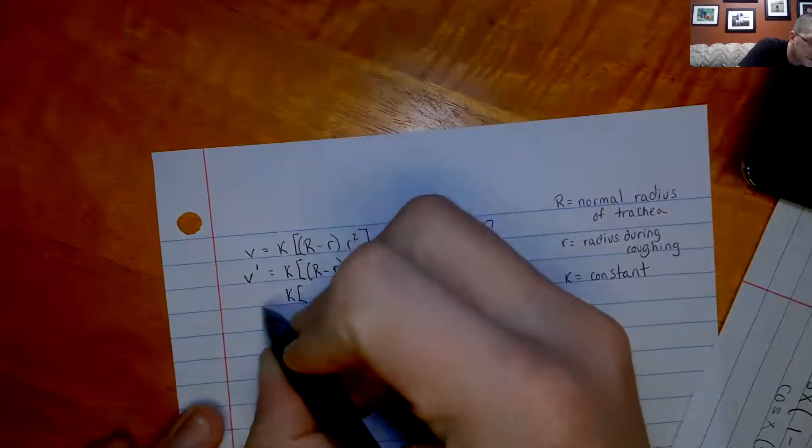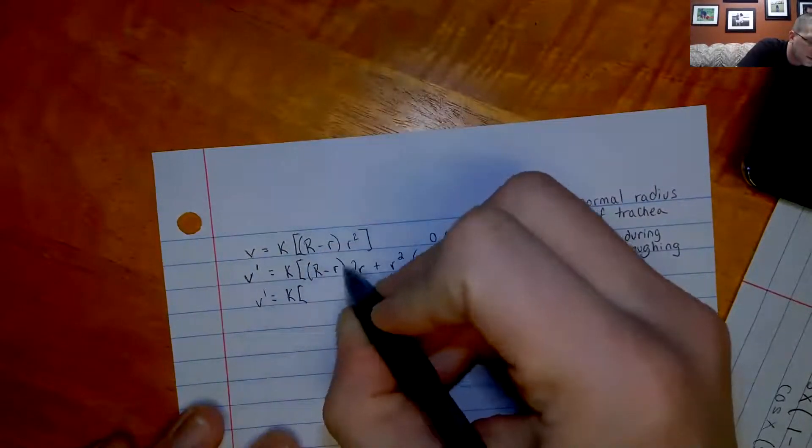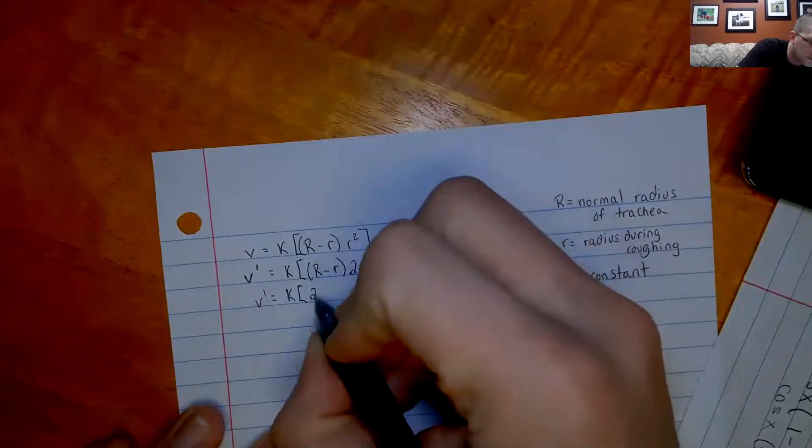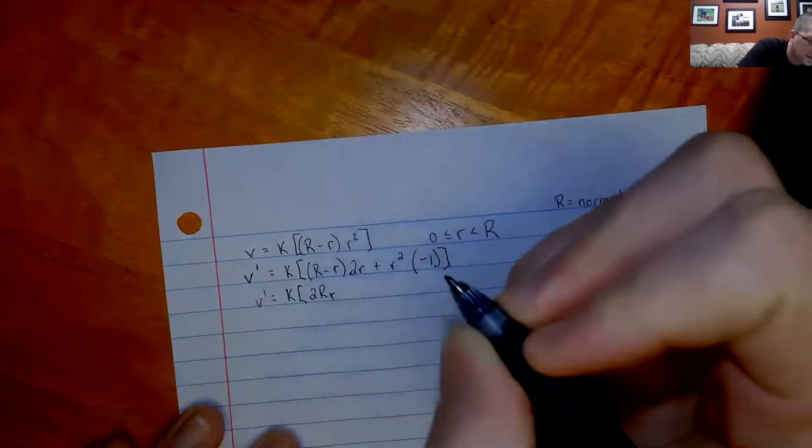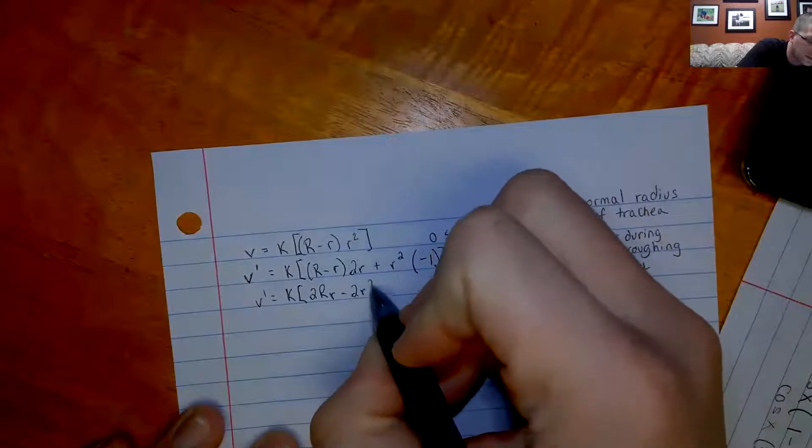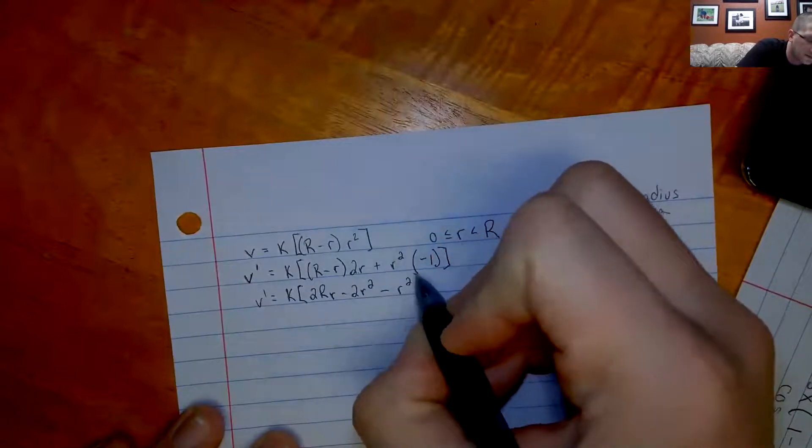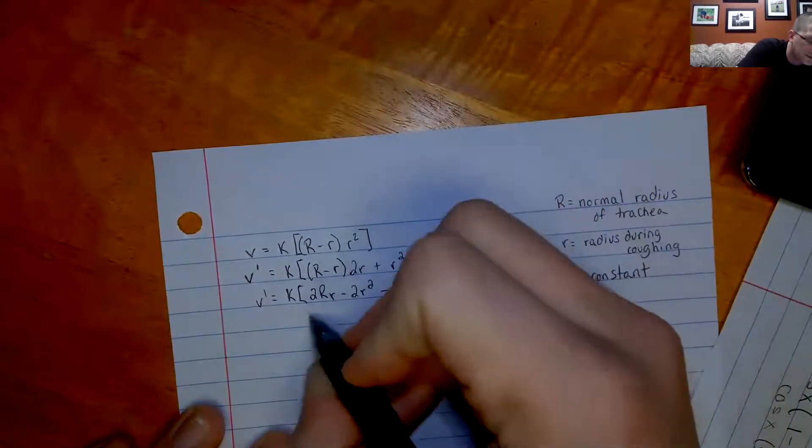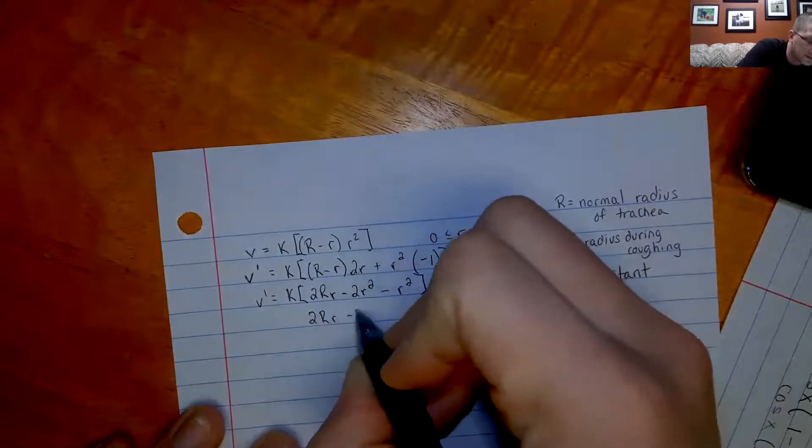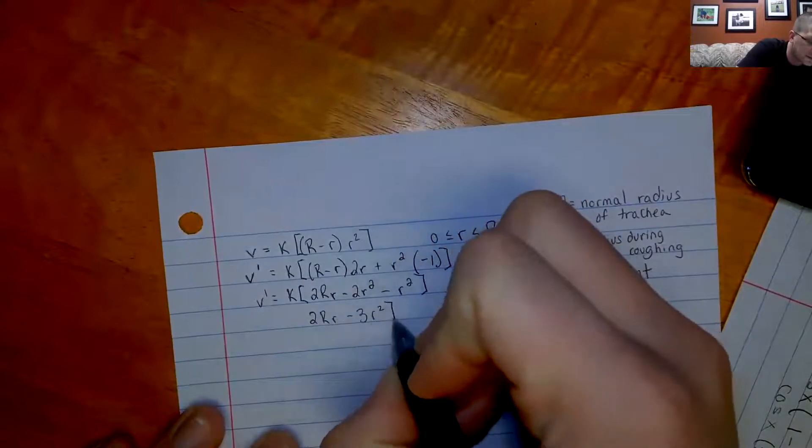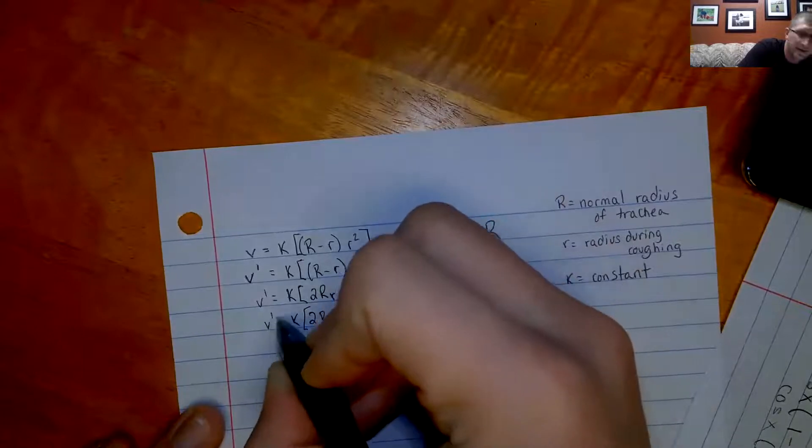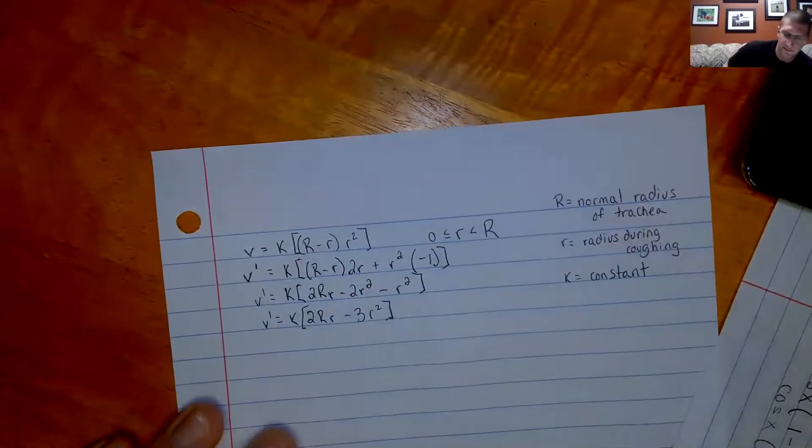So from there, I'm just going to do some simplifying. So R times 2r, we got 2Rr, minus 2r squared, minus r squared. Combine my like terms, and I get 2Rr minus 3r squared, with the k still on the outside because it's a constant.